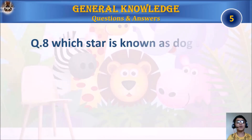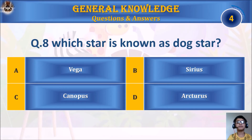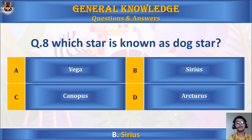Question 8: Which star is known as the Dog Star? A. Vega, B. Sirius, C. Canopus, or D. Arcturus. Your time starts. The answer is B. Sirius.